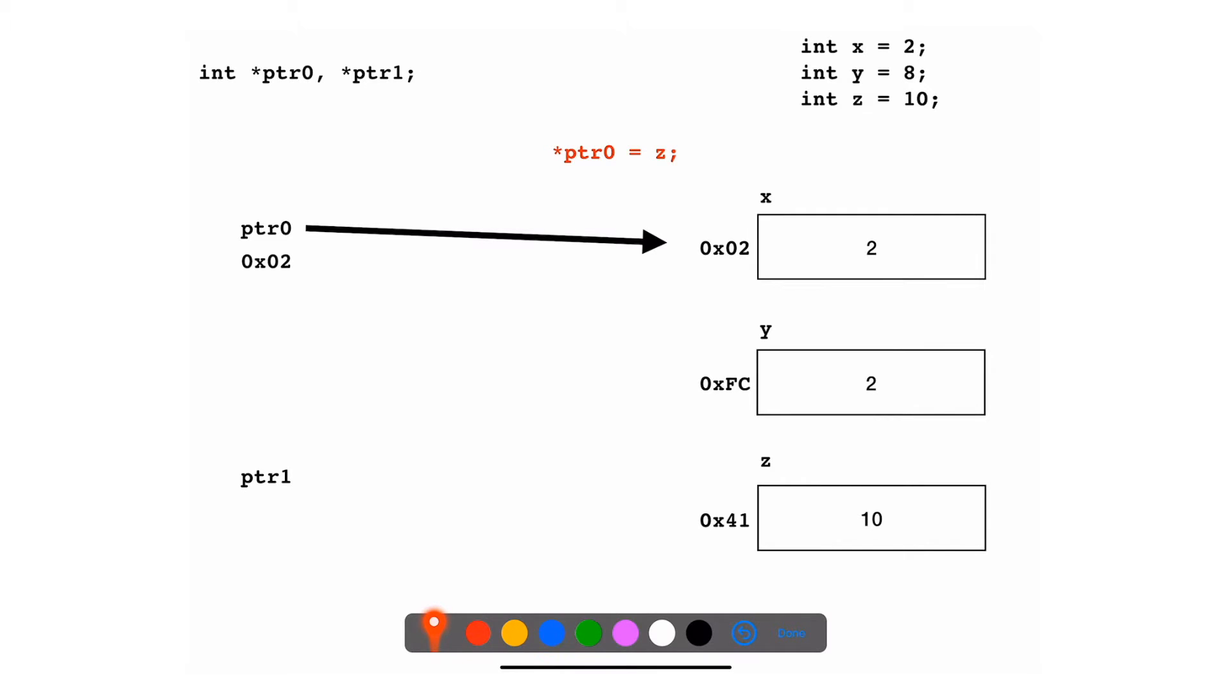Next, what we can do is put the dereferencing operator on the left side as well. What I'm saying here is go to the pointy that ptr0 is pointing to. Basically, dereference ptr0. Follow the arrow that it points to. So we're going to follow that—it points here—and what we need to put in it is the value of z. So value of z is 10, so now this 2 should be replaced and made 10.